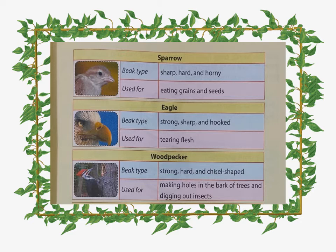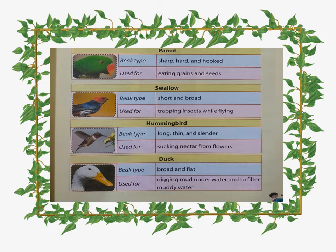Third one is the woodpecker. Its beak type is very strong, hard, and chisel-shaped. A chisel is the tool that a carpenter uses to make holes in wood. This beak is used by the woodpecker to make holes in the bark of a tree and to dig out insects.